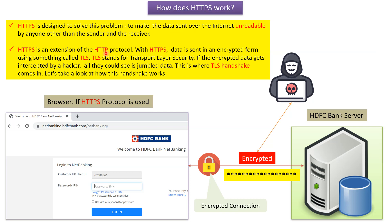HTTPS protocol is an extension of HTTP protocol. By using HTTPS protocol, the data sent over the internet is in encrypted form using something called TLS — Transport Layer Security. If the encrypted data gets intercepted by a hacker, all the hacker could see is jumbled data. This is where the TLS handshake comes into the picture.